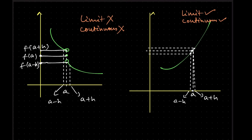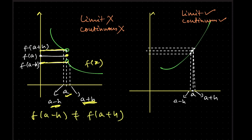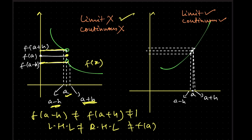Here you can see an example. This is a function f(x). At f(a) the value is here; at a plus h and a minus h the values differ. We can see that f(a minus h) is not equal to f(a plus h), so the left-hand limit and right-hand limit are not equal. Therefore the limit does not exist, and if the limit does not exist, the function cannot be continuous.